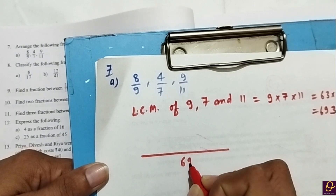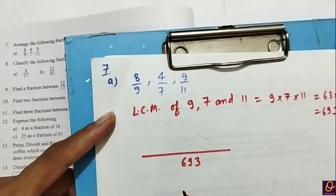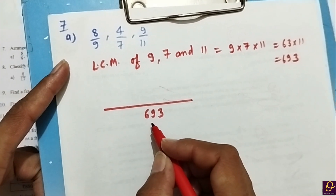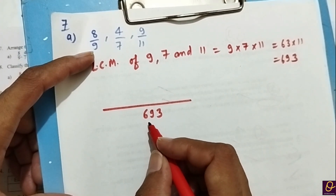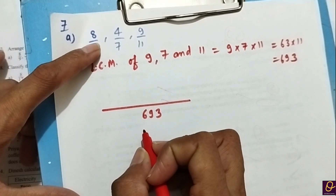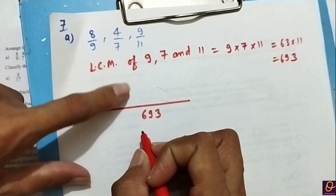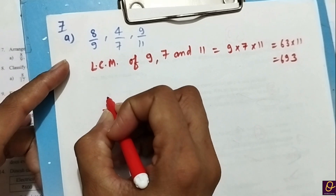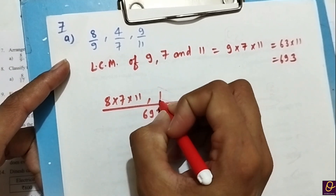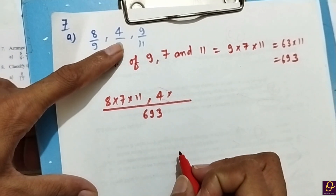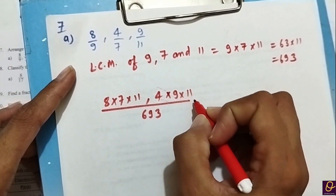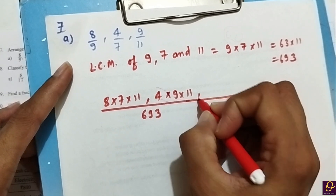Ab jab hum multiply karenge, question ko easy banate hain. Is type se denominator ko divide karna hai. Jab 9 se divide karenge toh remaining two denominators note kar dena: 8 × 7 × 11, then 4 × 7, and 9 × 11. Yeh tab hota hai jab saare denominators different hon.